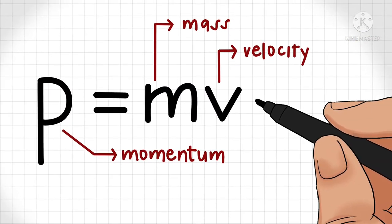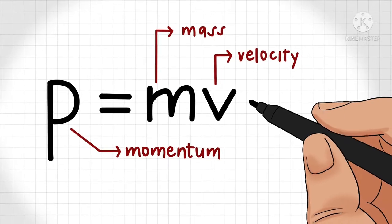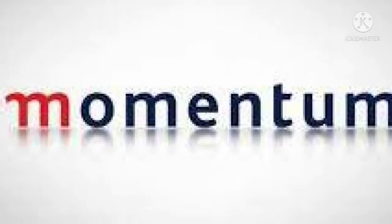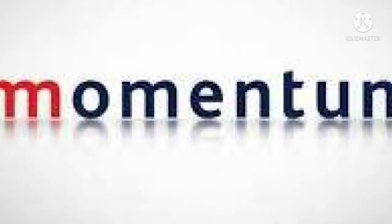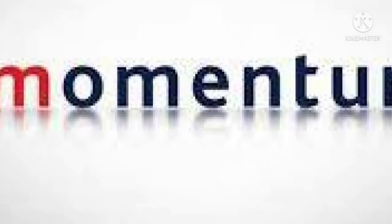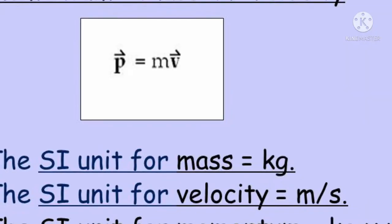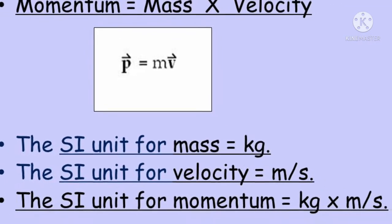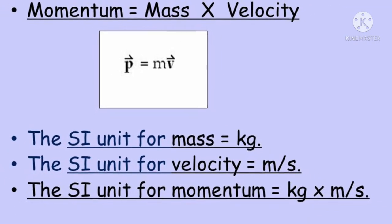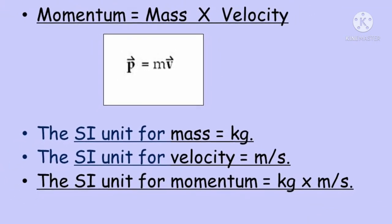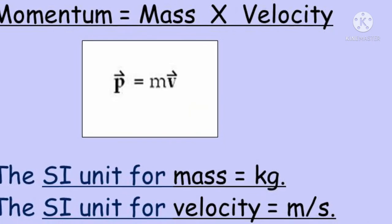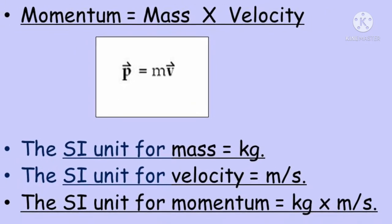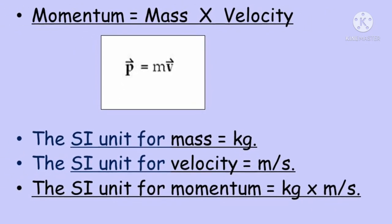It is clear that if a body is at rest, its velocity is zero and its momentum is also zero. Thus the total momentum of a gun and bullet before firing is zero because their velocity is zero.